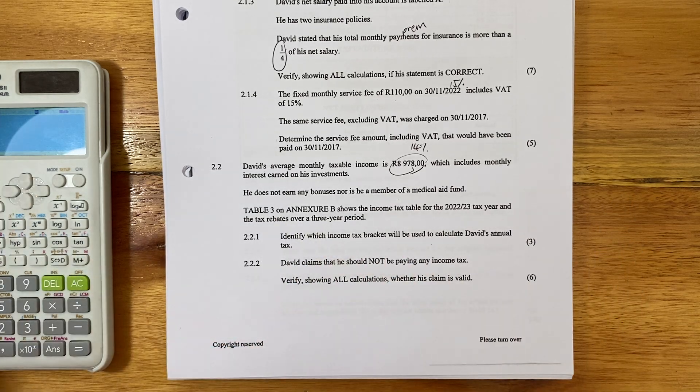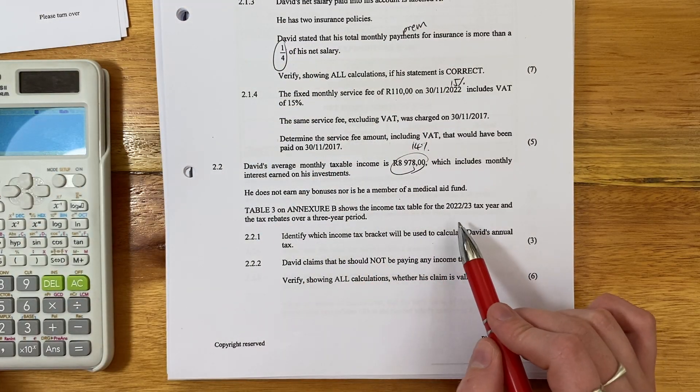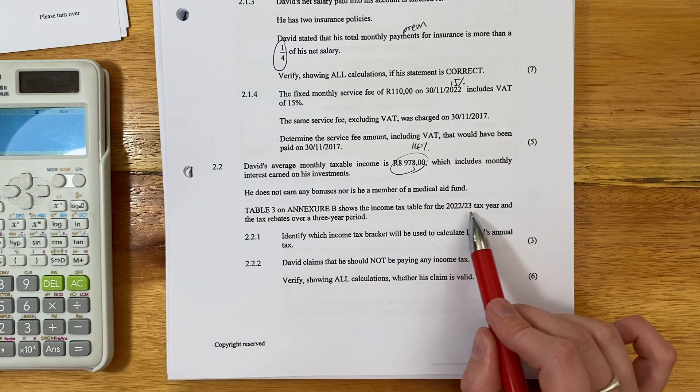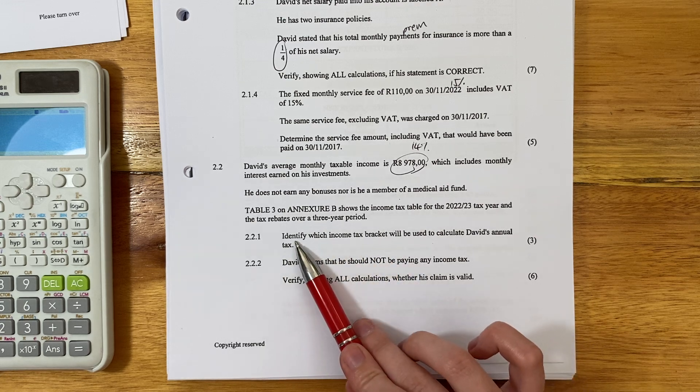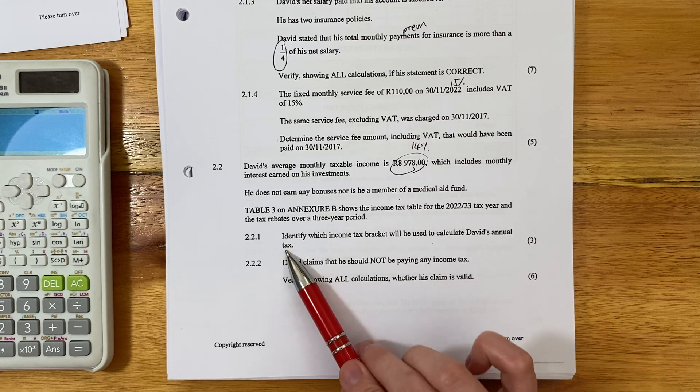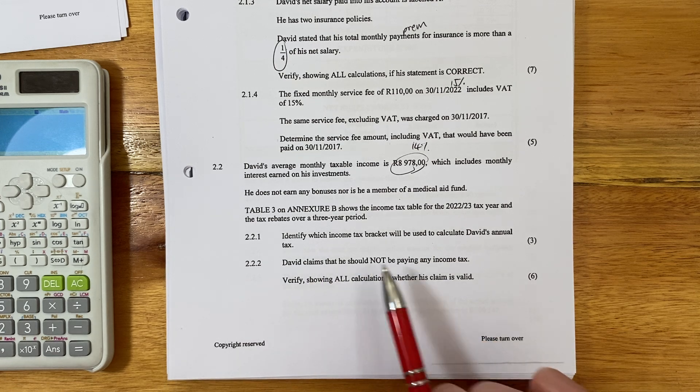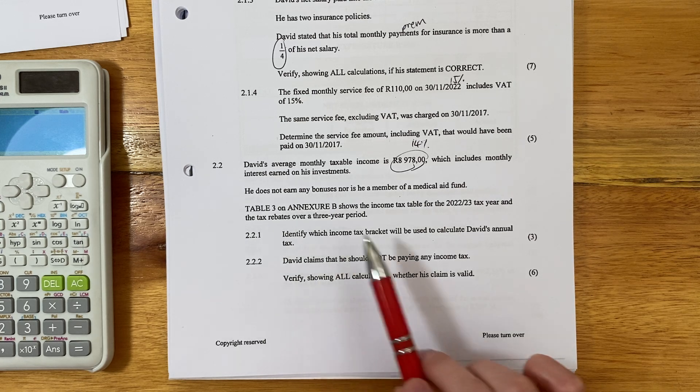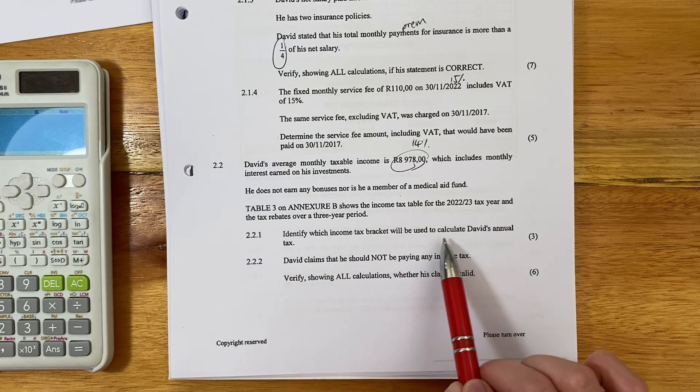Table 3 on Annexure B, go find Annexure B, shows the income tax table for the 2022 and 2023. Remember, tax years run from the 1st of March until the end of February the next year. That's why it's over two years. And the tax rebates over a three-year period. Identify which income bracket will be used to calculate David's annual tax. David claims that he would not be paying any income tax. Verify showing all calculations. Oh, I've just completely jumped. Let's go back here.